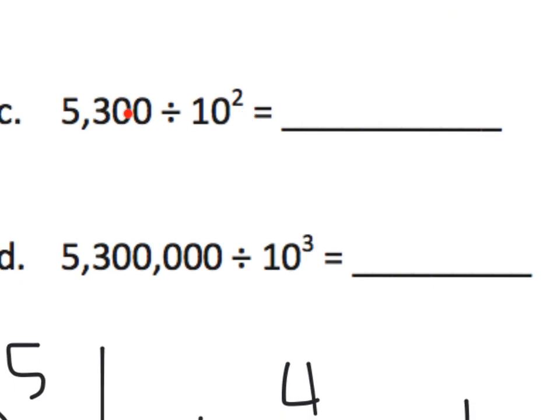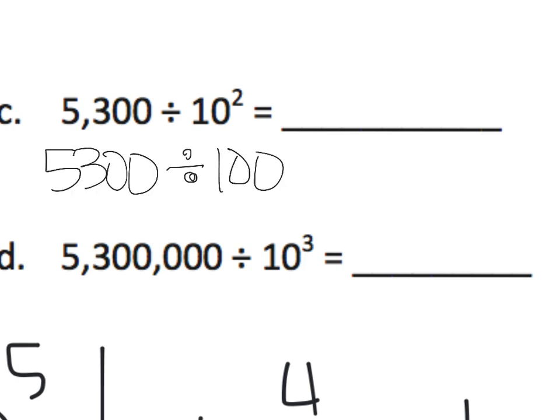5,300 divided by 10 to the second power means 5,300 divided by 100. We've learned that means you're going to chop off two zeros, or move the decimal place two places to the left, or move each of the digits two places to the right. It gives us the final answer of 53.